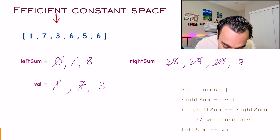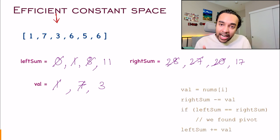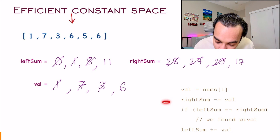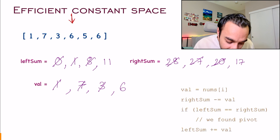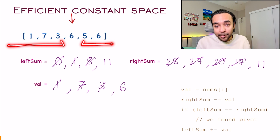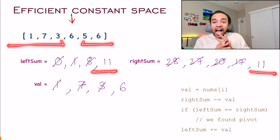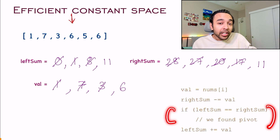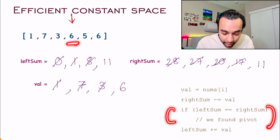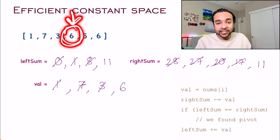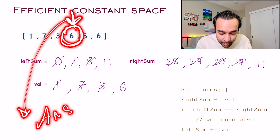Before moving ahead, I update the left sum: 8 plus 3 gives 11. I move ahead and the value changes to 6. I update the right sum: 17 minus 6 gives 11. Notice what I have now — a left sum of 11 covering all those left elements, and a right sum of 11 covering the right elements. Both are equal, so this is where I stop. I've found the pivot. I return this particular index — not the value — and that becomes my answer.